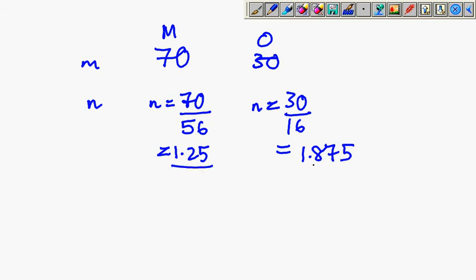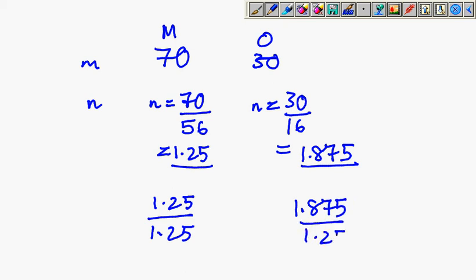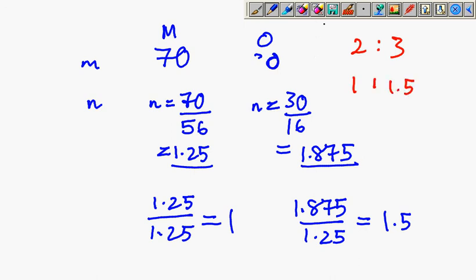We now find the simplest ratio. The smaller number is 1.25, so we divide both by 1.25. That gives 1 for M and 1.5 for O. The ratio 1 to 1.5 is the same as 2 to 3. Therefore the empirical formula of the oxide is M₂O₃.